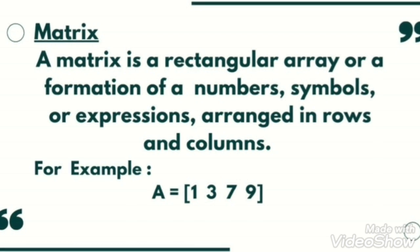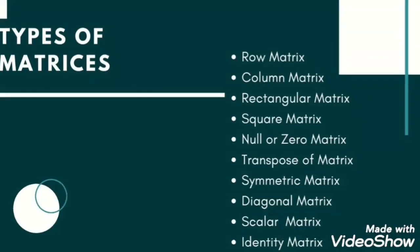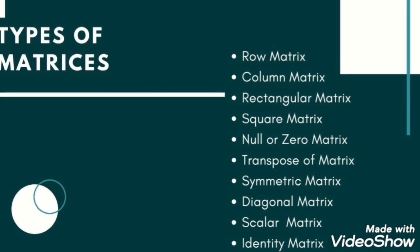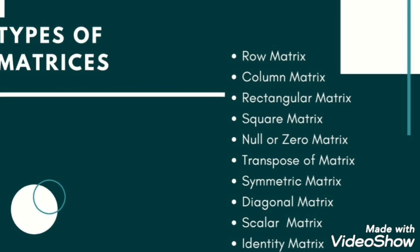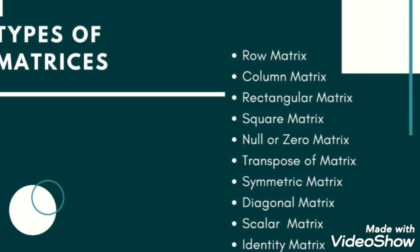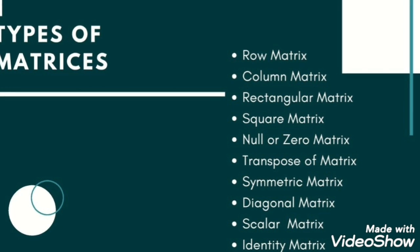Types of matrices: row matrix, column matrix, rectangular matrix, square matrix, null or zero matrix - null matrix is also called a void matrix, transpose of matrix. Transpose is basically a technique to change the order of any matrix.